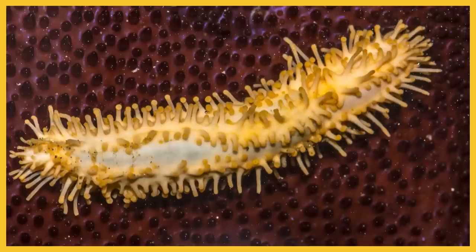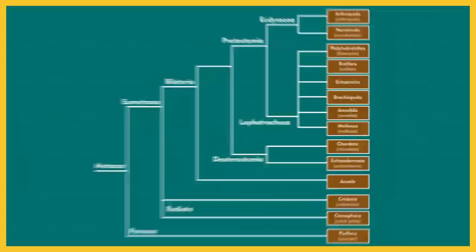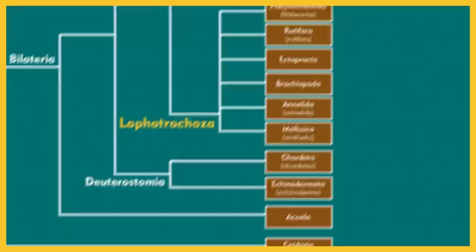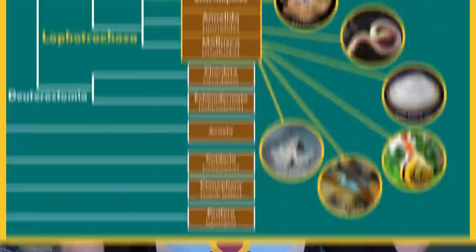Now that chordates and sea urchins have been sorted out, and we've left behind our jellies and sponges, we're still left with a crazy amount of invertebrates. There's a massive group called Lophotrochozoa, which includes a ton of smaller groups like flatworms, rotifers, bryozoans, brachiopods, segmented worms, and mollusks — like clams, snails, squids, and octopuses.